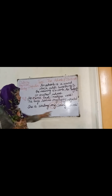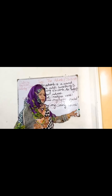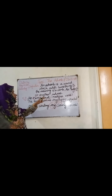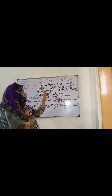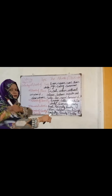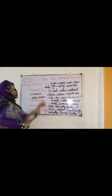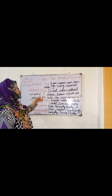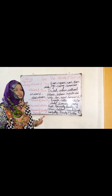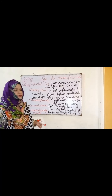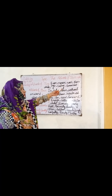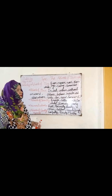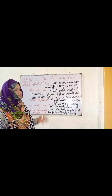So an adverb is a word which adds something to the meaning of a verb, adjective, or another adverb. Now these are the kinds of adverb. Adverb of time — it means when the action takes place. Words like ever, never, now, then. For example: he is crying now, the baby is crying for milk now.